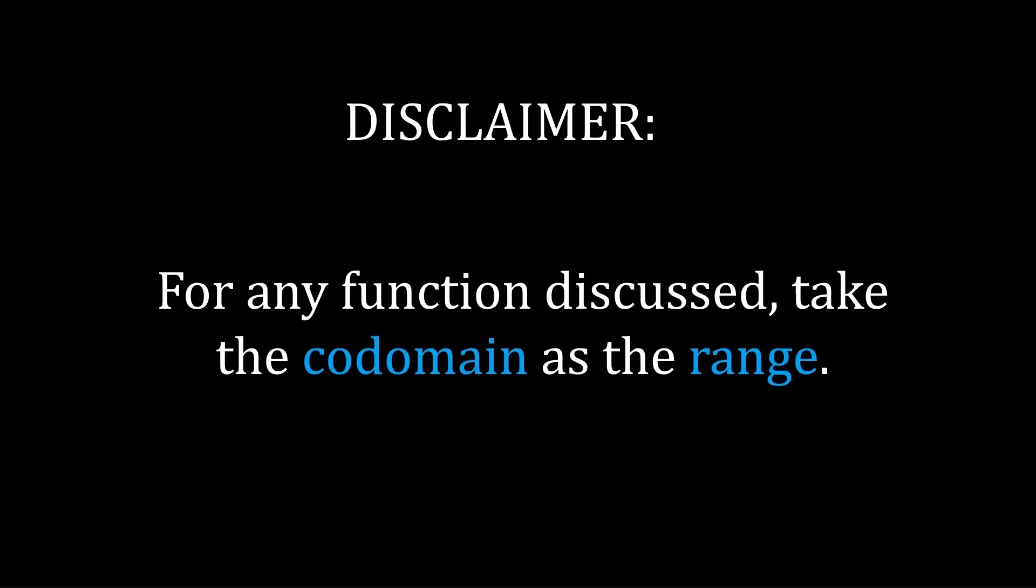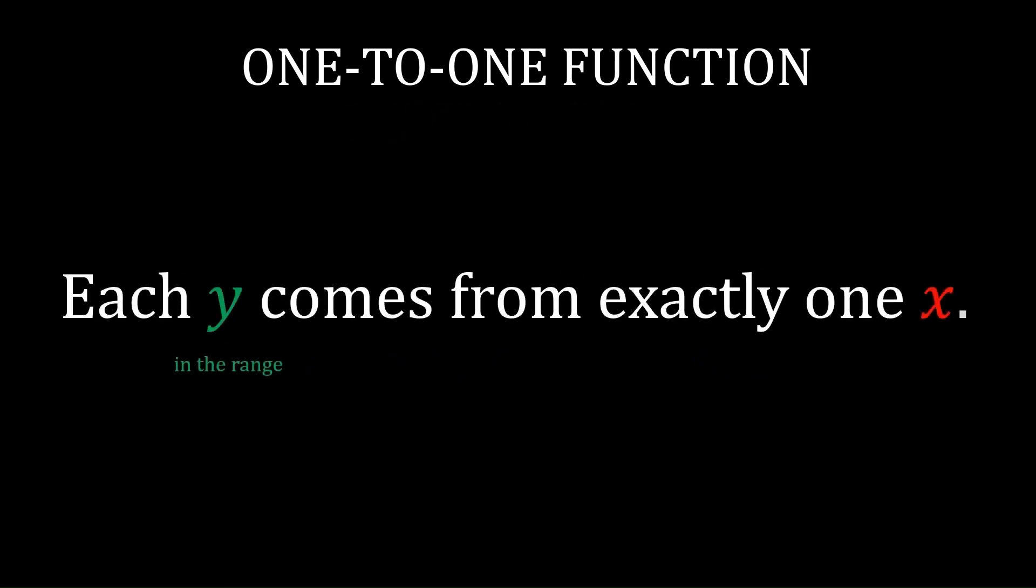Okay, so what is a one-to-one function? A one-to-one function satisfies the property that each y in its range comes from exactly one x in its domain. Basically, each output that is possible comes from exactly one input. You're not allowed to have an output that comes from two inputs, or three, or four, etc.